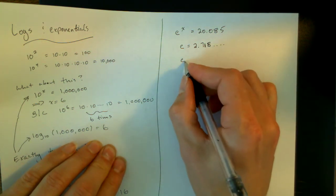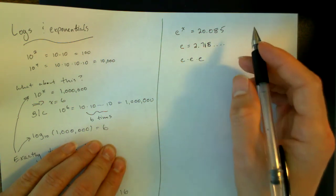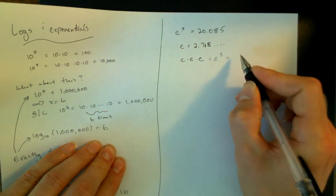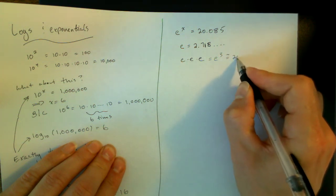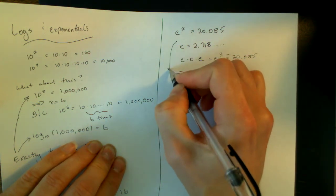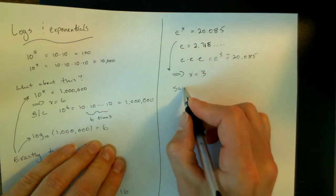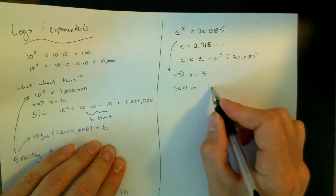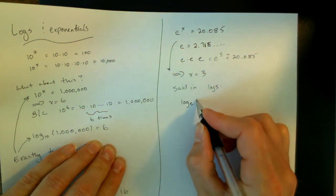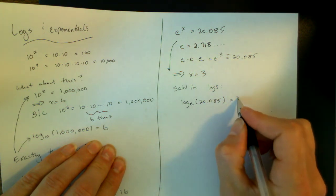Well, it turns out that e times e times e, if you just take this number, 2.718 dot dot dot, and you multiply it by itself three times, that's e to the third, the number you get is very roughly 20.085. So that implies that in our equation up here, x must equal three. And again, set in logs, right here, we would say that log base e of 20.085 is equal to three.